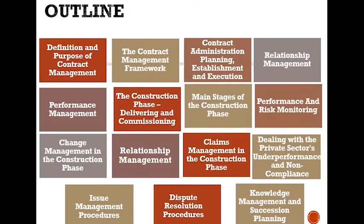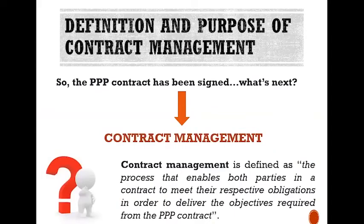The outline covers: Definition and Purpose of Contract Management, Contract Management Framework, Contract Administration Planning, Establishment and Execution, Relationship Management, Performance Management, The Construction Phase, Delivering and Commissioning, Main Stages of the Construction Phase, Performance and Risk Monitoring, Change Management in the Construction Phase, Relationship Management, Claims Management in the Construction Phase, Dealing with the Private Sector's Underperformance and Non-Compliance, Issues Management Procedures, Dispute Resolution Procedures, Knowledge Management and Succession Plan, and Definition and Purpose of Contract Management.